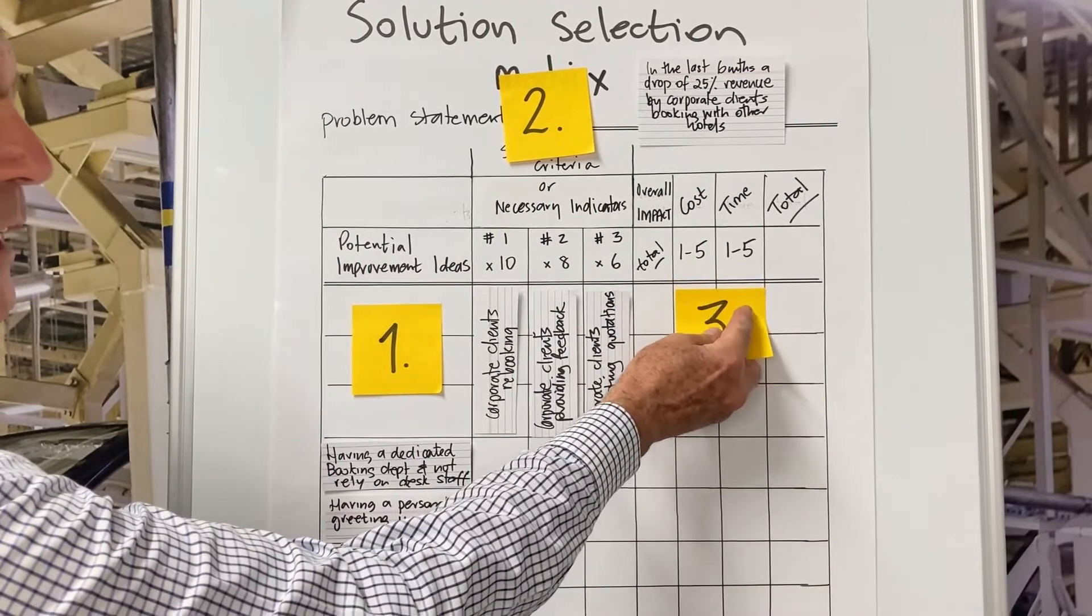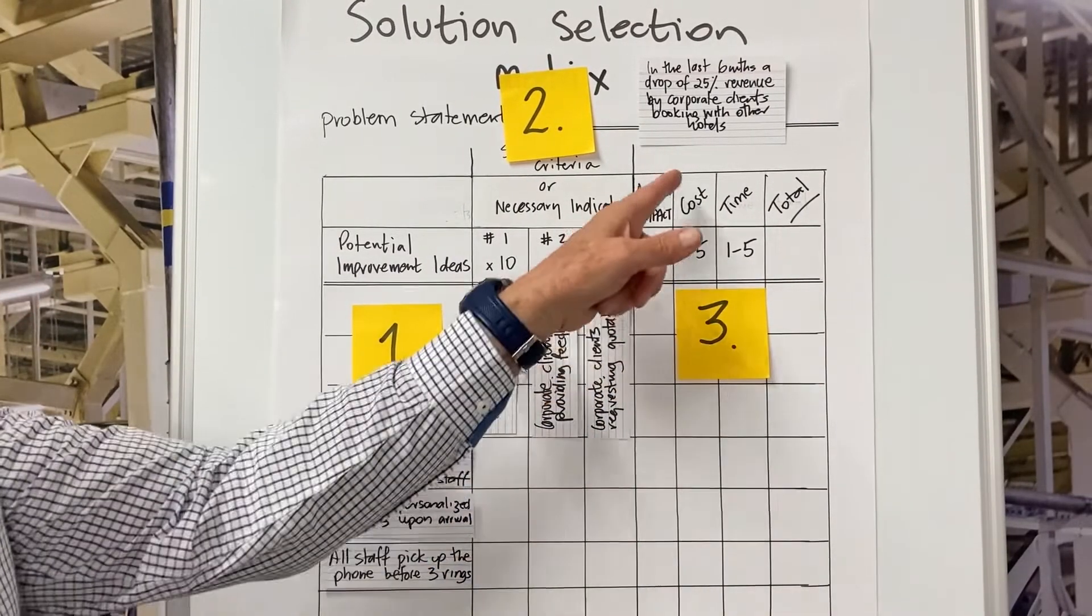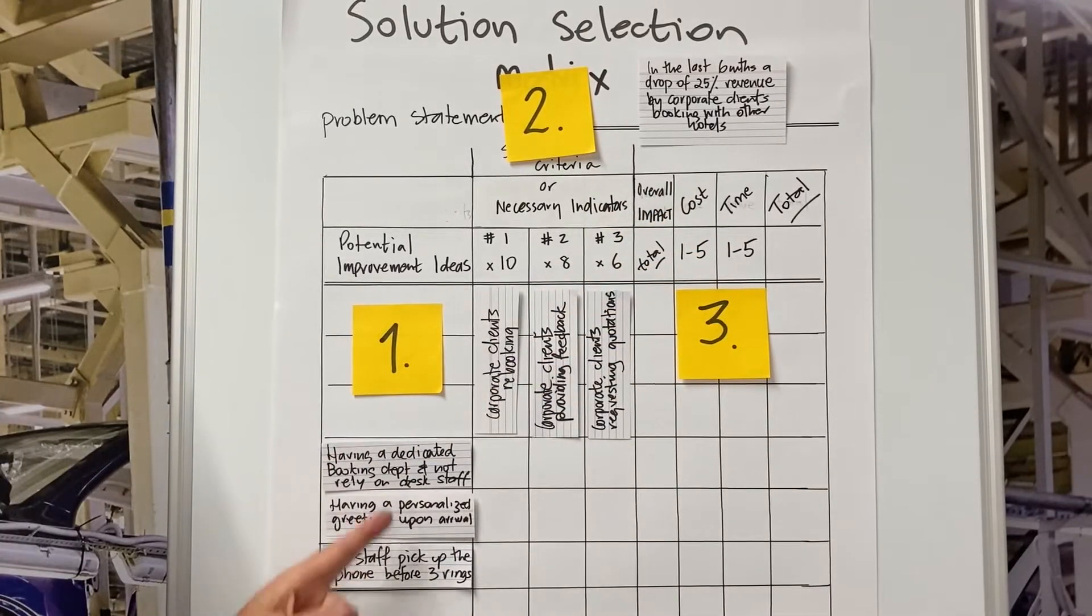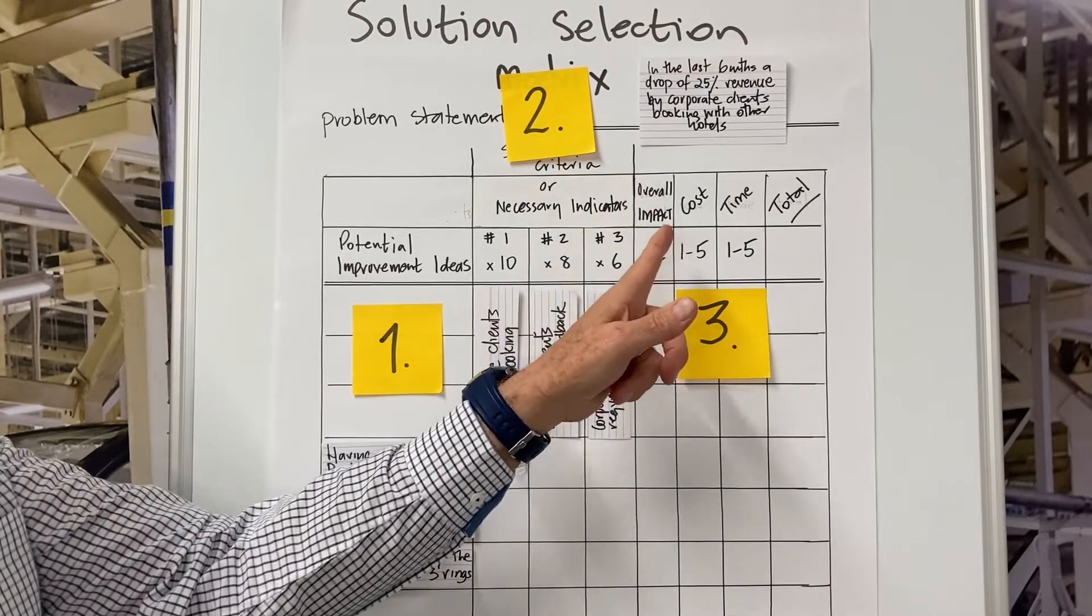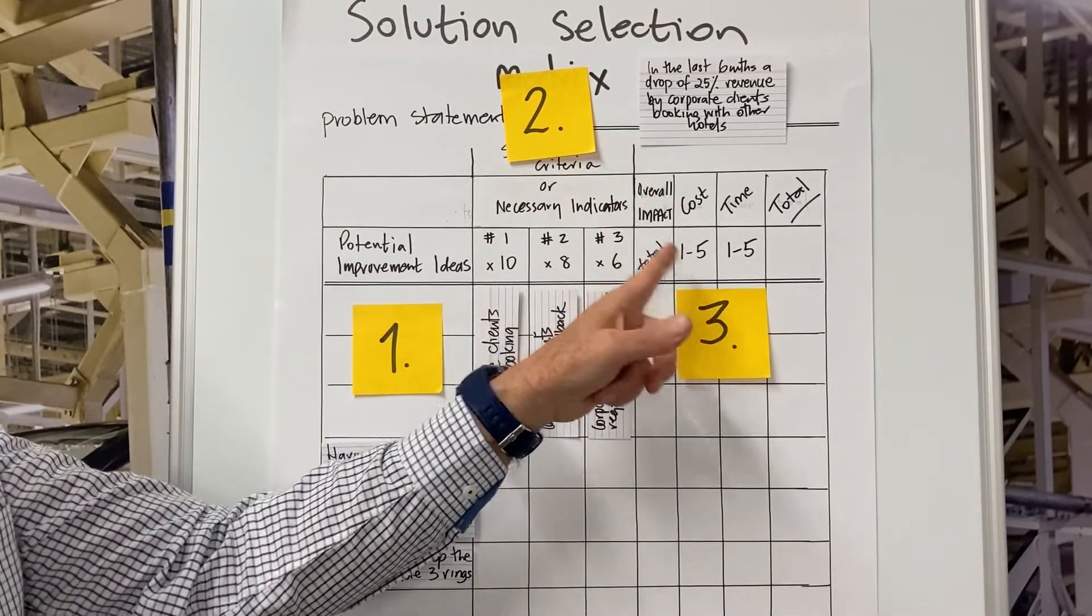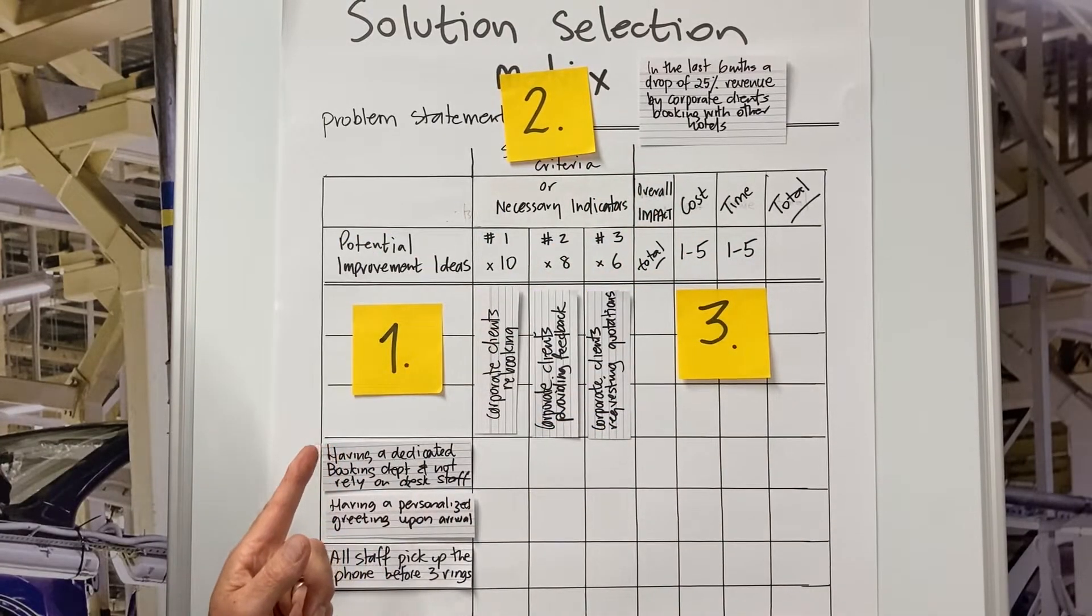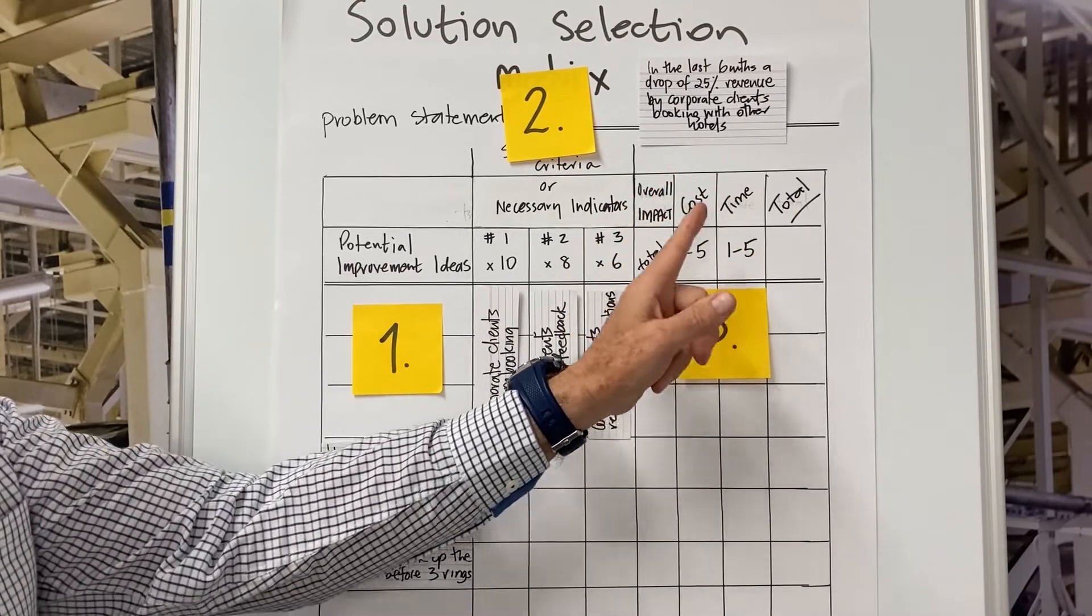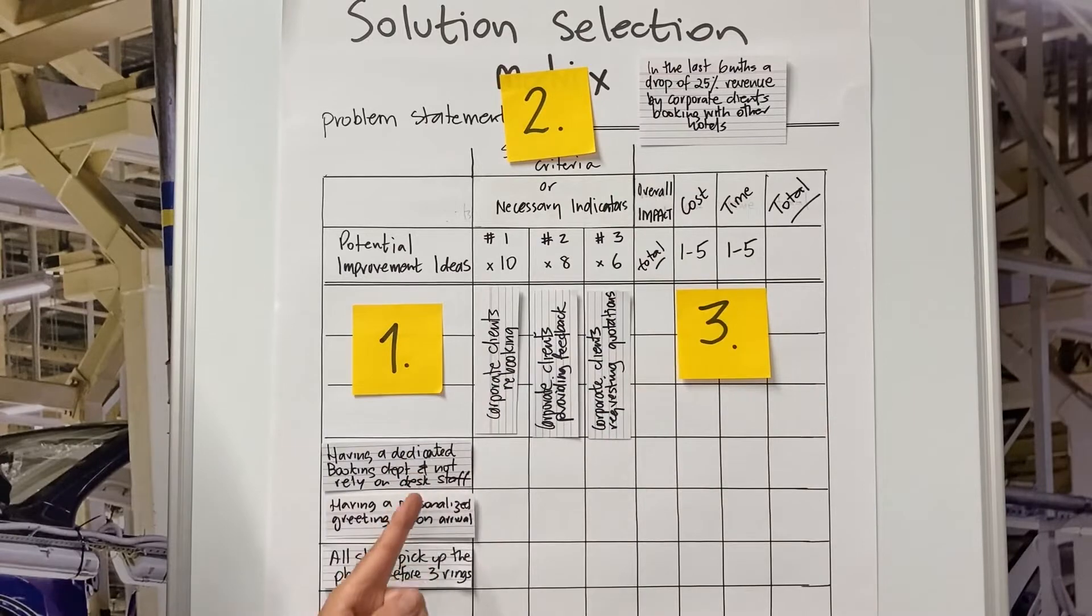In step three, we go over to these two columns of cost and time. What is the cost to implement these ideas? Where five being the least costly, one being the most expensive. And then time on a scale one to five, where five is the quickest, one is the slowest to implement these ideas.